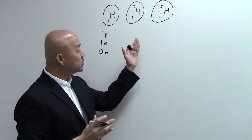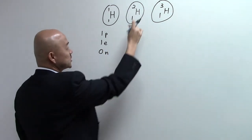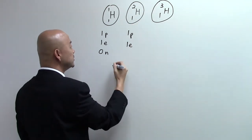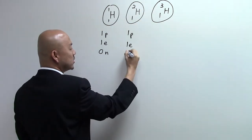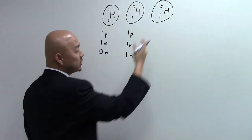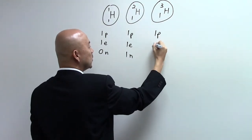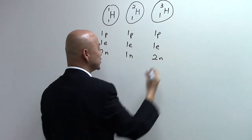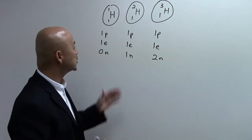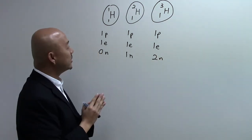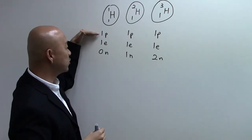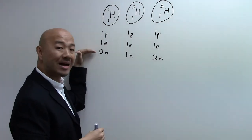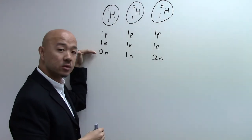Likewise we're going to do it for the second and third isotopes. For the second one it will be one proton, one electron, and 2 minus 1 gives us one neutron. For the last one, one proton, one electron, and 3 minus 1 gives you two neutrons. So in this way you can see that isotopes tend to have the same number of protons, same number of electrons, but different number of neutrons.